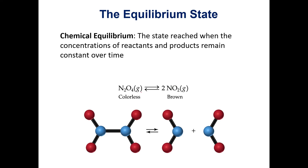This doesn't mean that nothing is happening at equilibrium. We're still going back and forth — N2O4 breaks down into NO2, and NO2 reacts to form N2O4. What happens is this reaction goes at the same rate in the forward and reverse directions, so the concentrations of reactant and product do not change over time.